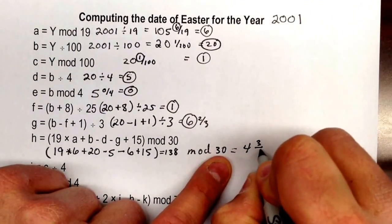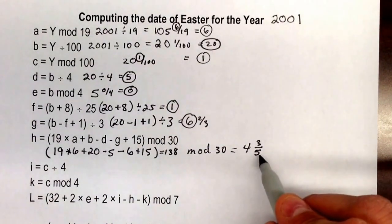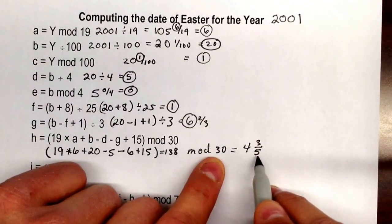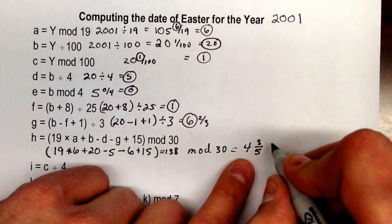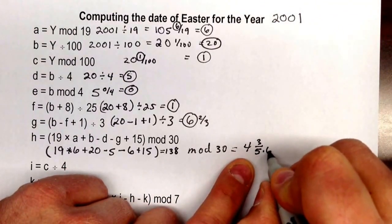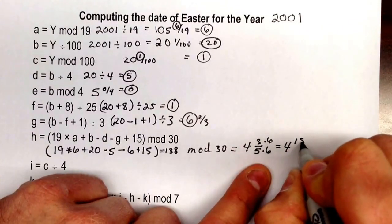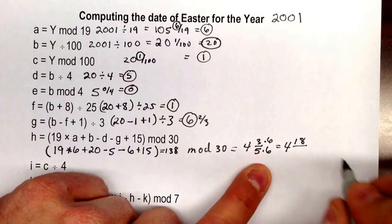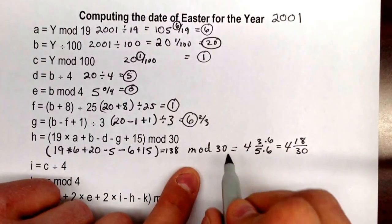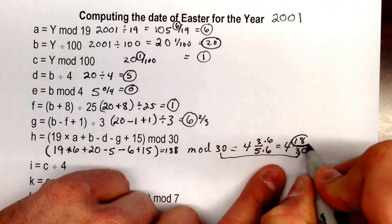So this is 4 and 3/5. This is where you have to pay really close attention because this is kind of a problem now. This is not what we divide it by. Notice the mod does not match the 5. So to get this to be the correct remainder up here, we need to multiply both these by 6 to get an equivalent fraction of 4 and 18/30. Now since these two match, I can say that this is h.